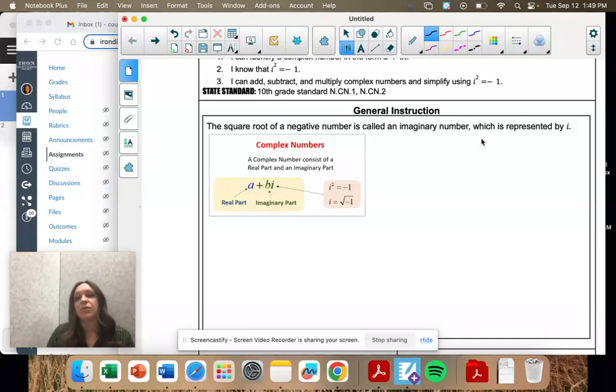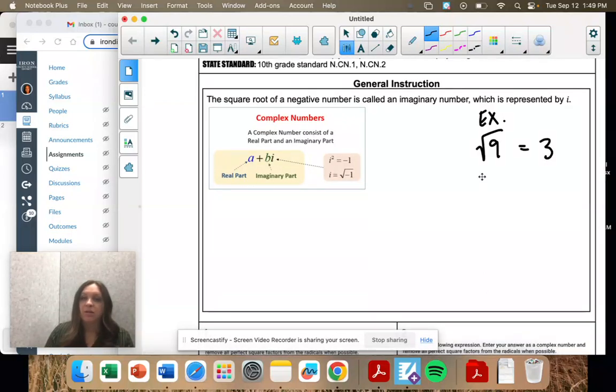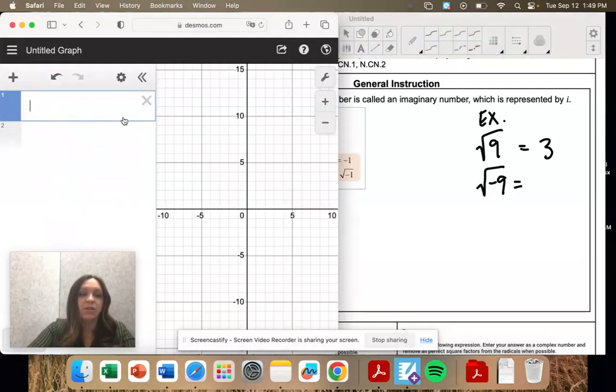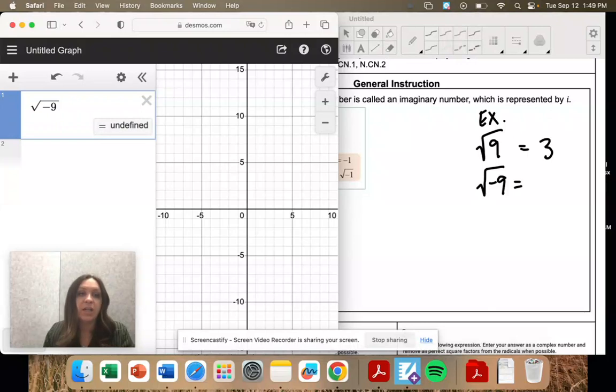So for example, if we want to look at the square root of positive 9, we know that that's 3, because 3 times 3. If we want to look at the square root of negative 9, if you type that in your calculator, you're going to get undefined. So we want to work with it so it's not undefined that we can work with it.